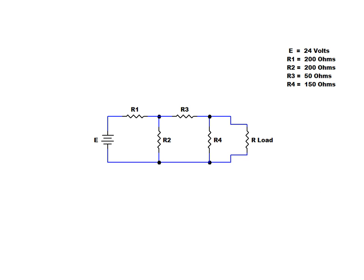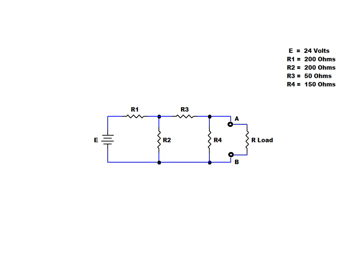First, we identify the portion of the network for which the Thevenin-equivalent circuit is to be determined. Next, label the terminals connecting this portion to the remaining part of the circuit as points A and B. To complete the first step, remove the portion of the network that is not being included in the simplification.